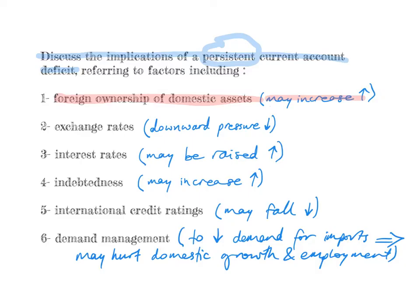It may also have a downward pressure on the exchange rate. A persistent current account deficit means that the country overall is importing a lot more than it is exporting, so the foreign demand for its currency is weaker than the supply of its currency on the forex market. At the same time, it may lead to interest rates being raised — the central bank may have to raise interest rates as a way of attracting foreign investment.